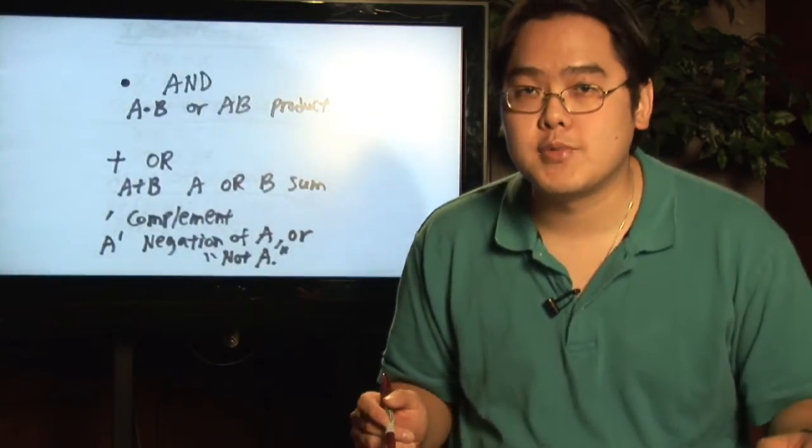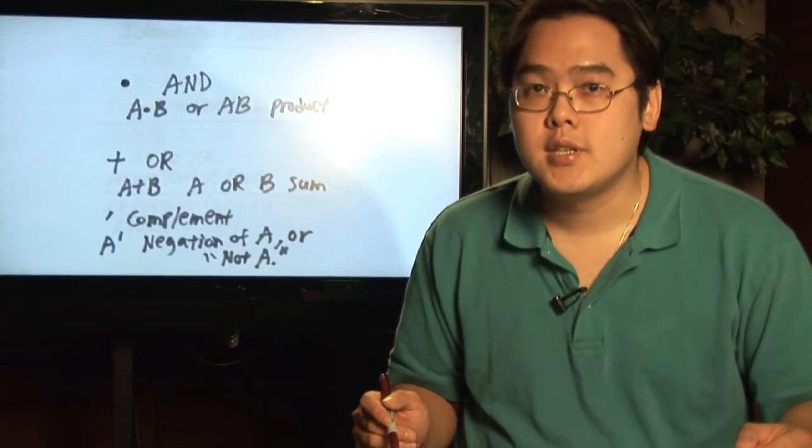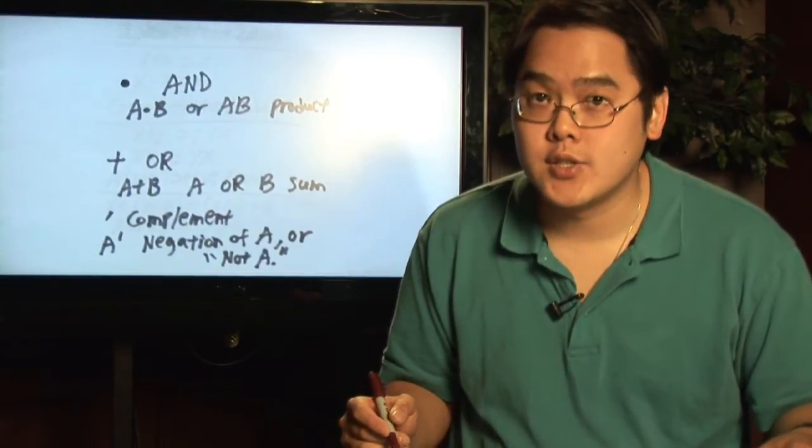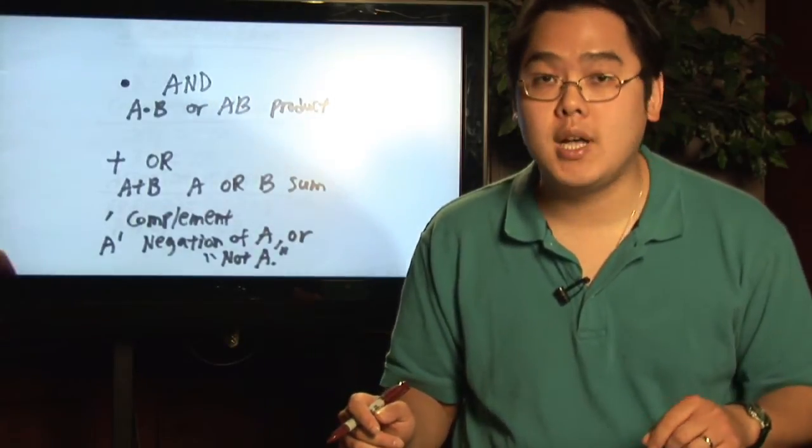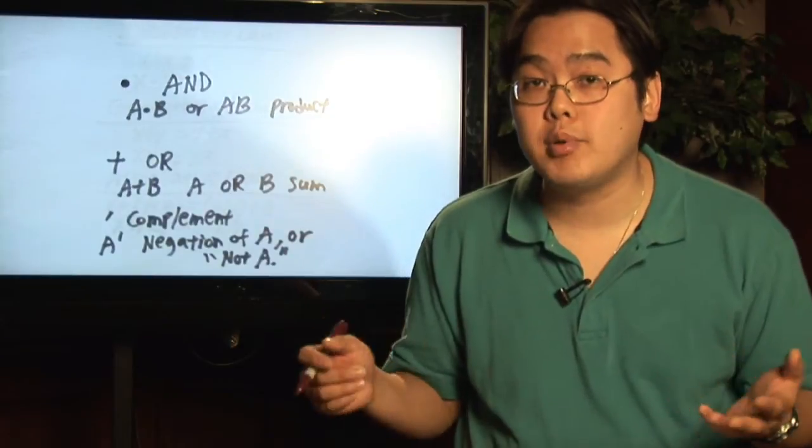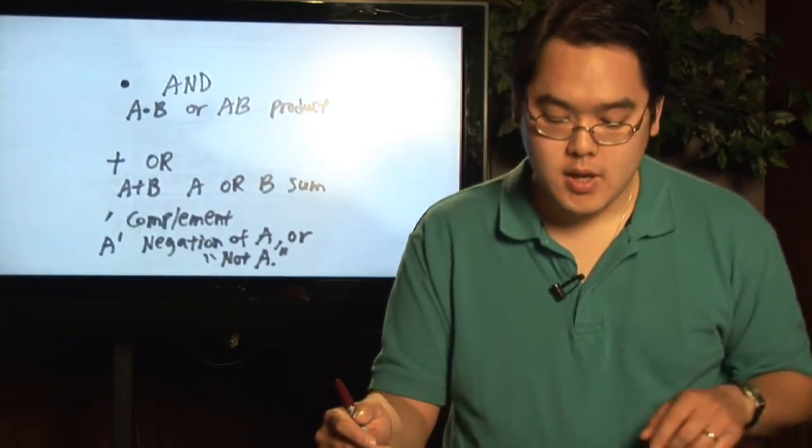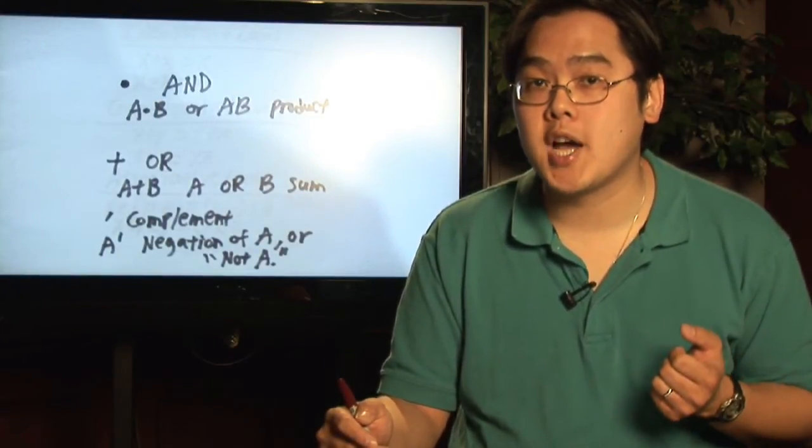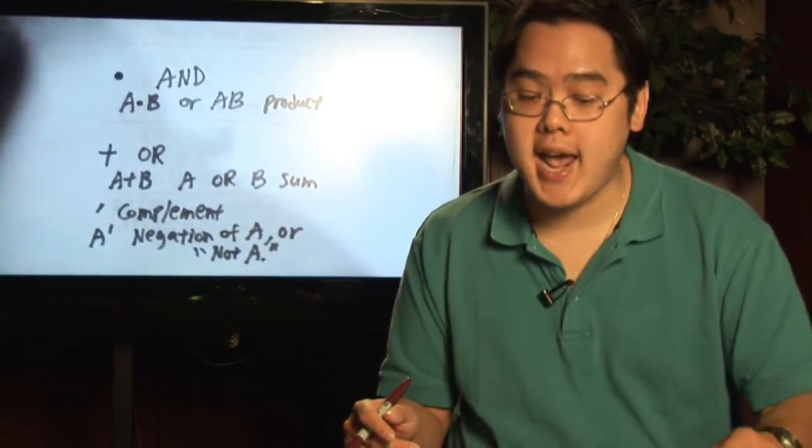Remember we have the symbols times, plus, and prime. Times, which is multiplication, the product, also stands for the word and. So multiplication is associated with and - a times b, a and b. Plus, which is the sum, stands for the word or. So when you have a plus b, you can also think of it as a or b. And you also have the prime, which stands for complement. So a prime is the complement of a, but also think of that as the negation of a or not a.